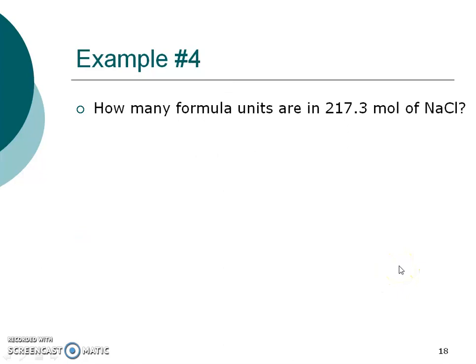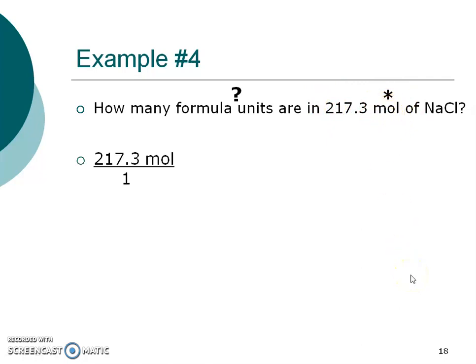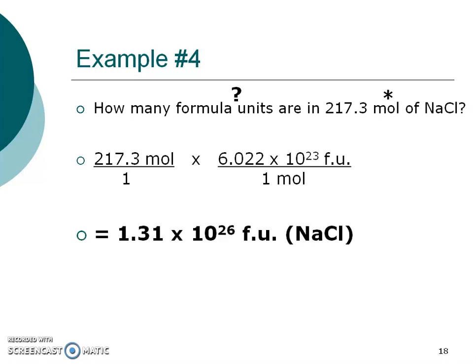Last example: How many formula units — that would be my question mark — are in 2.17 moles? Sometimes they abbreviate mole as MOL. I'm starting with my number, and the unit is moles. My conversion is going to be formula units over moles. Pause, write this information, do it in your calculator, and see if you get the right answer. This is a formula unit because it's an ionic compound — a compound that starts with a metal.